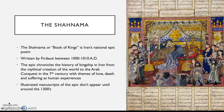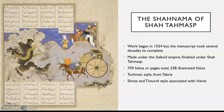Here I've shown you a page from the Great Mongol Shahnama, which was one of the first illustrated Shahnamas, appearing in the 1300s. But we're going to focus on the Shahnama of Shah Tahmasp, which began to be worked on around 1524 and took several decades to make.